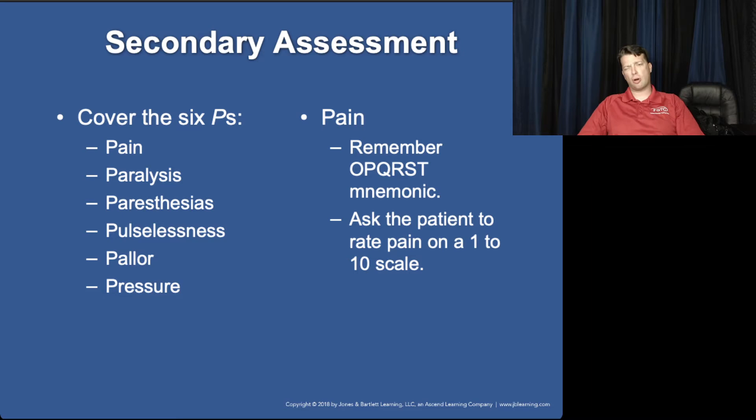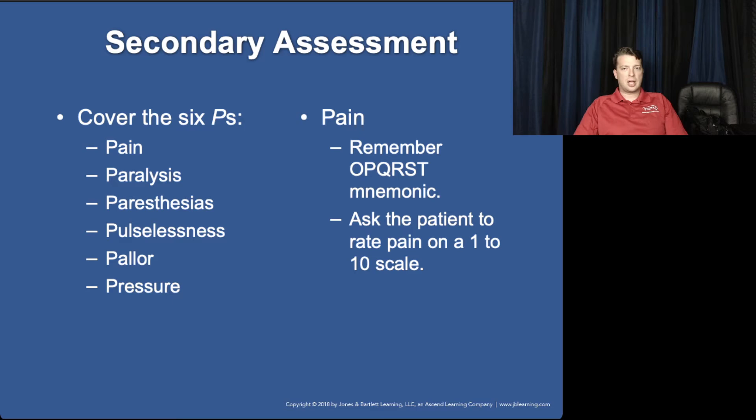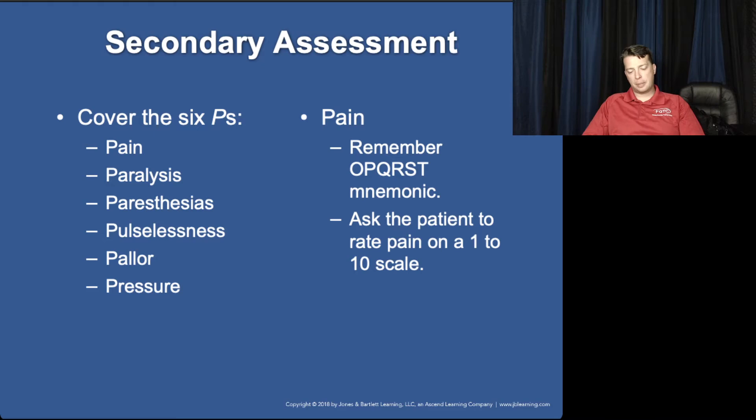Pain, paresthesia, paralysis, pulselessness, pallor, and pressure — these are very common to all musculoskeletal injuries, but more so when you're dealing with compartment syndrome. A patient who has experienced a musculoskeletal injury is going to have pain and may very well have pallor. However, the more common response to musculoskeletal injuries is flushing — redness and swelling from inflammation.